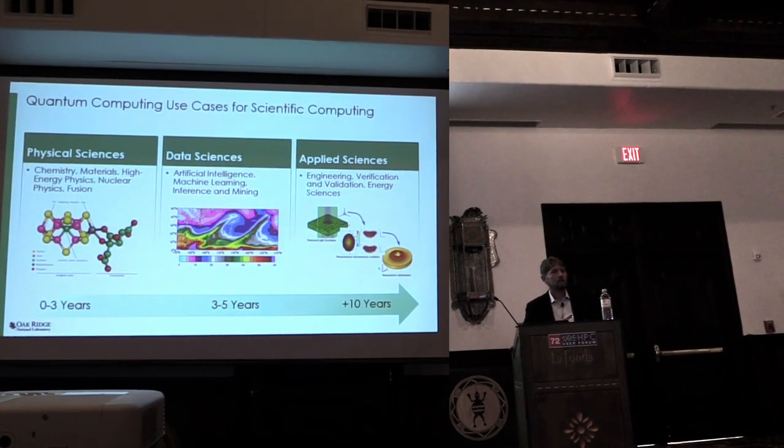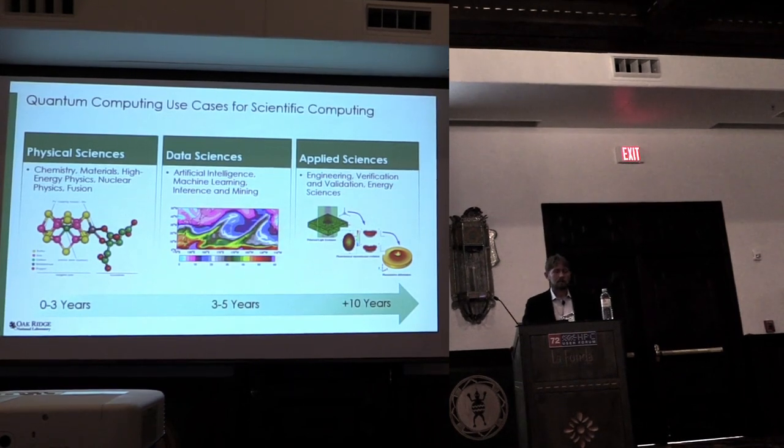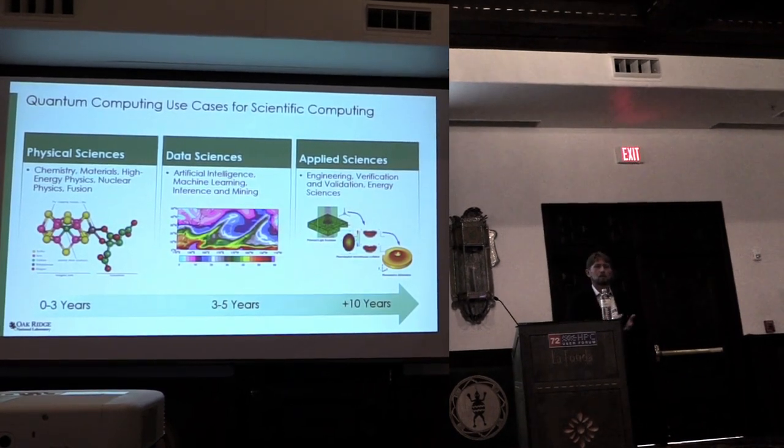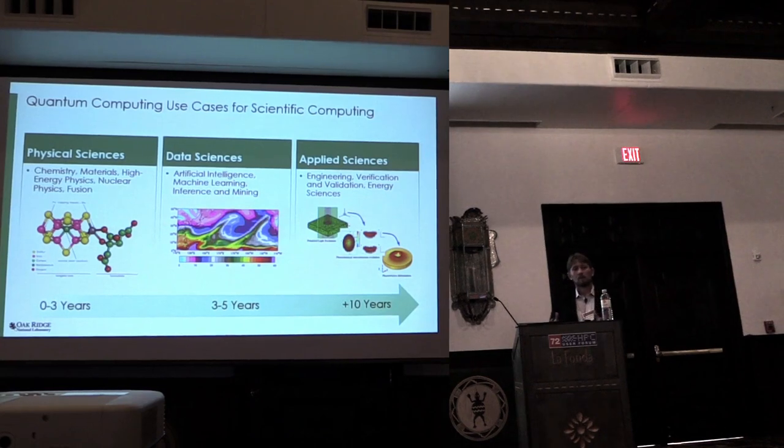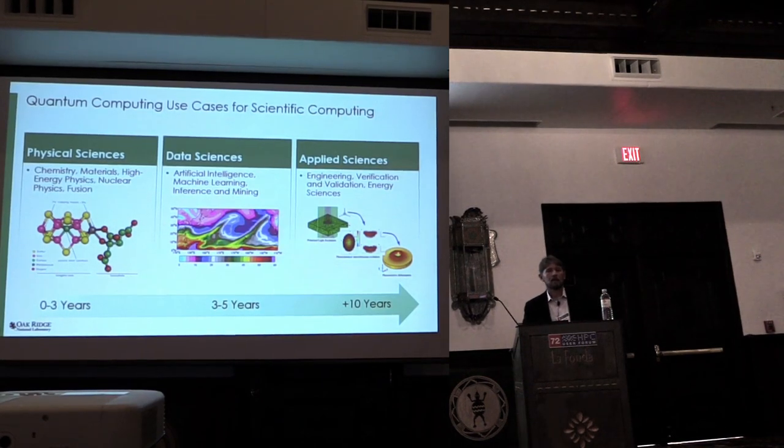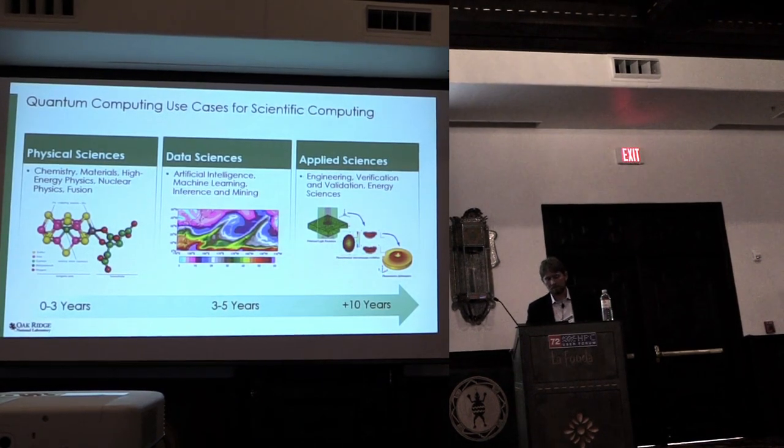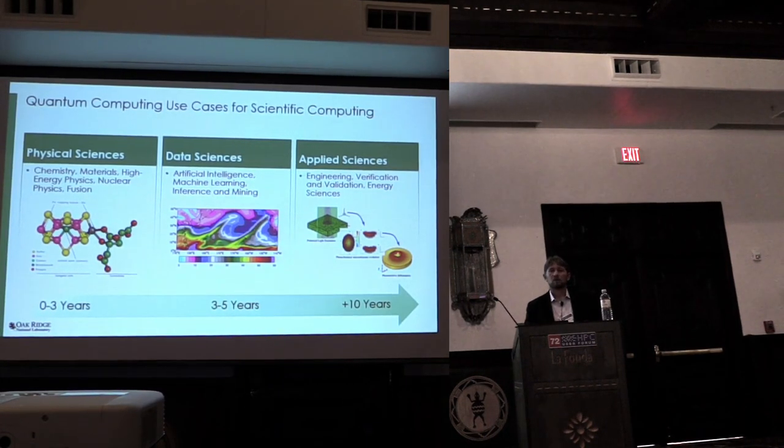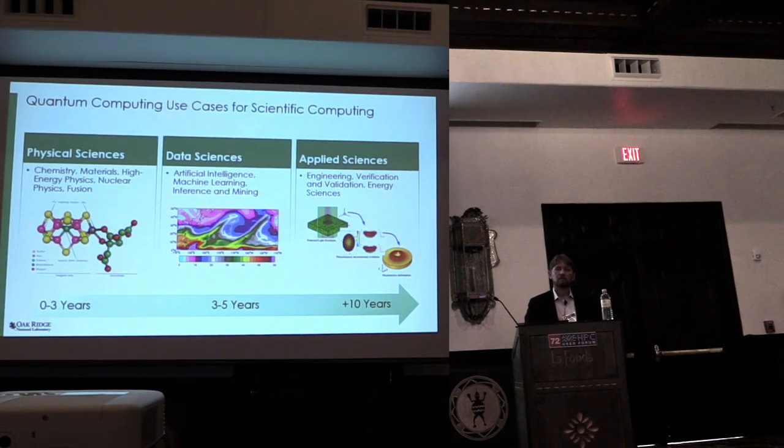In the three to five year range, though, is where data sciences come in. This is machine learning, AI, places where quantum computing, which again is a probabilistic model of computation, can be used for inference problems. However, there's an IO problem right now that prevents us from using these in real settings, where we have to provide sufficient amounts of data to the processor in a sufficient amount of time to be competitive.